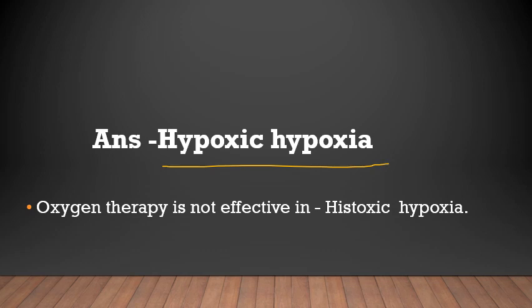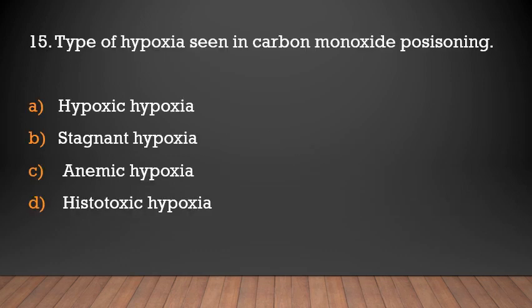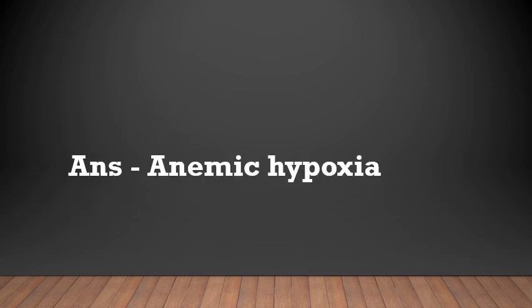Oxygen therapy is not effective in histotoxic hypoxia. Type of hypoxia in carbon monoxide poisoning is: hypoxic hypoxia, stagnant hypoxia, anemic hypoxia, or histotoxic hypoxia? The answer is anemic hypoxia. Anemic hypoxia is seen in carbon monoxide poisoning.